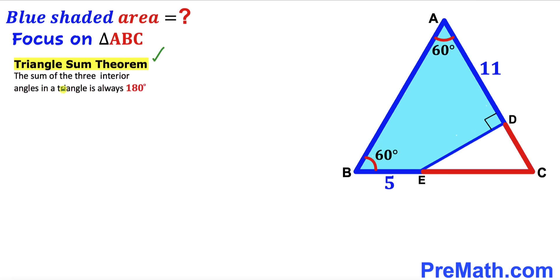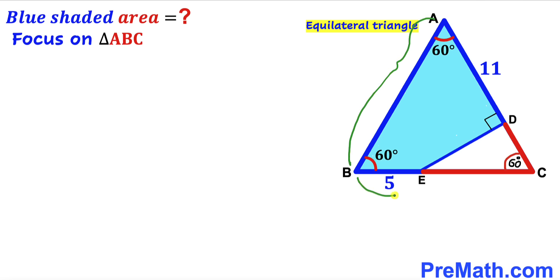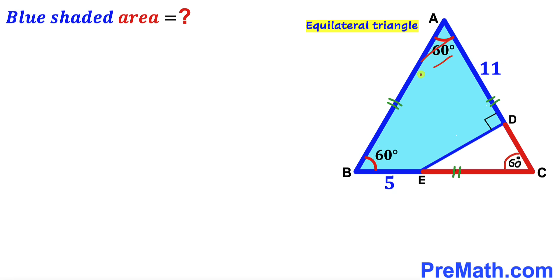According to the triangle sum theorem, the sum of three interior angles in a triangle is always 180 degrees. We know angle A in triangle ABC is 60 degrees and angle B is 60 degrees, so therefore the third angle must also be 60 degrees. We conclude that triangle ABC is an equilateral triangle, meaning side AB equals side BC equals side AC — all sides are congruent.